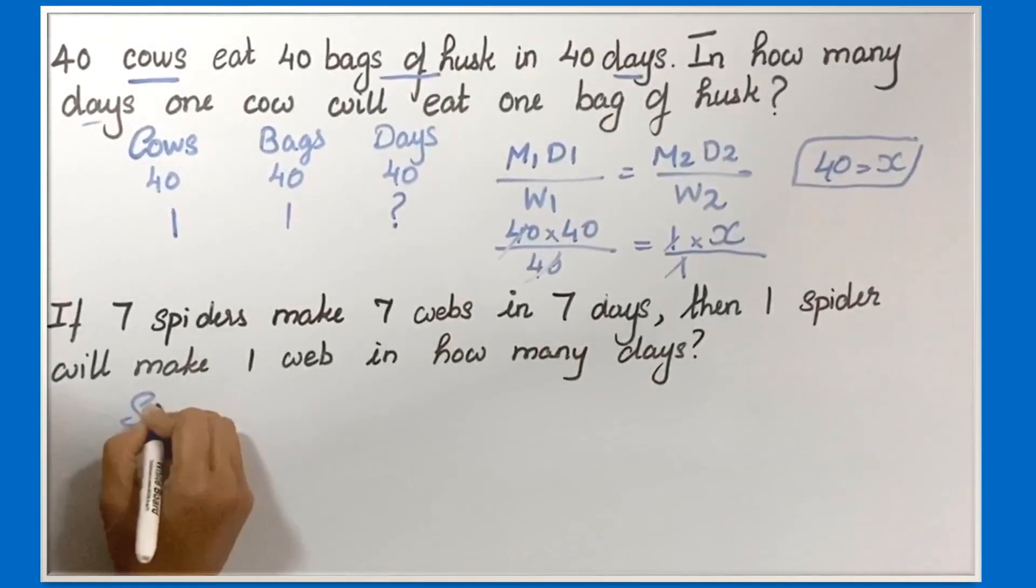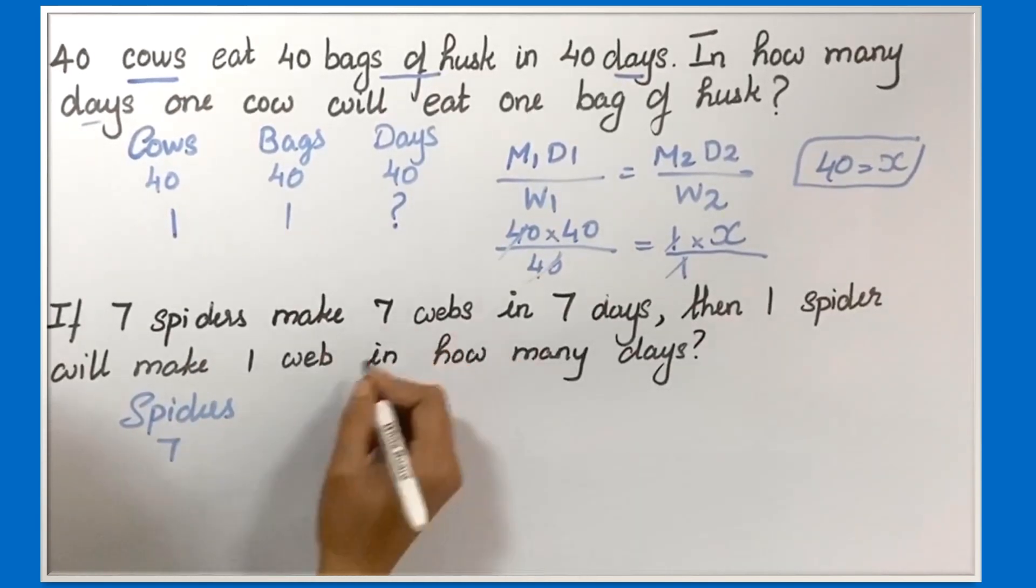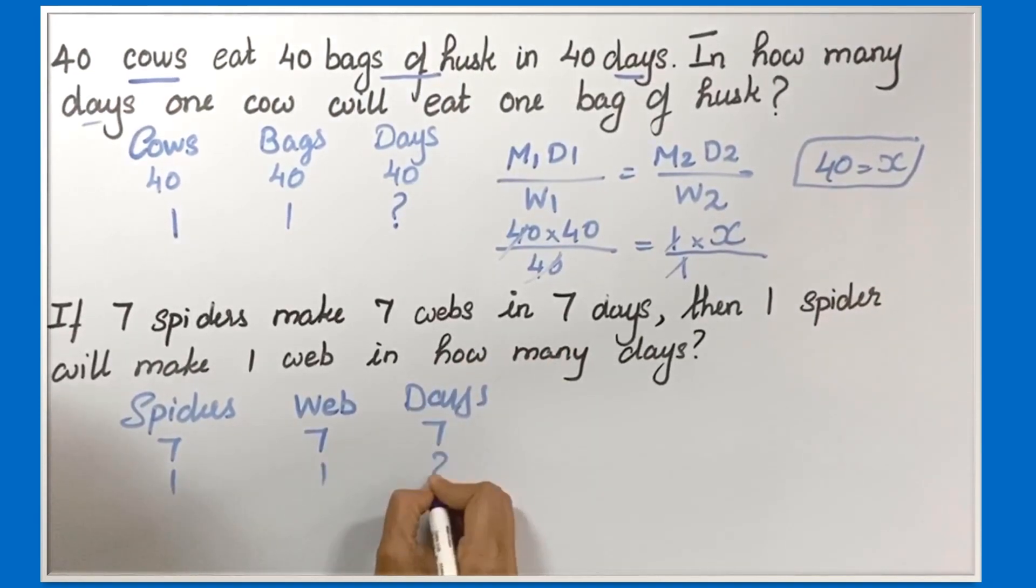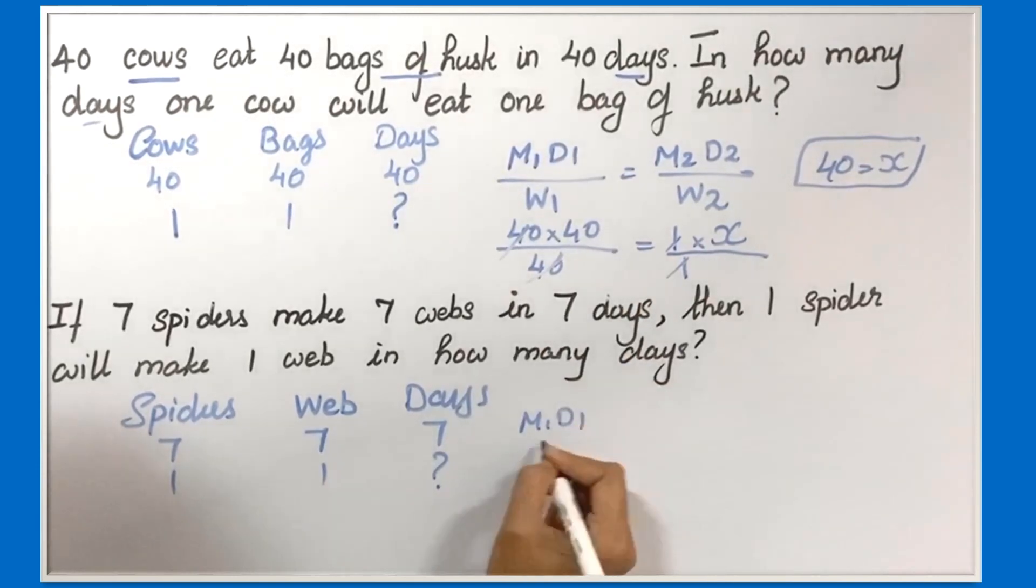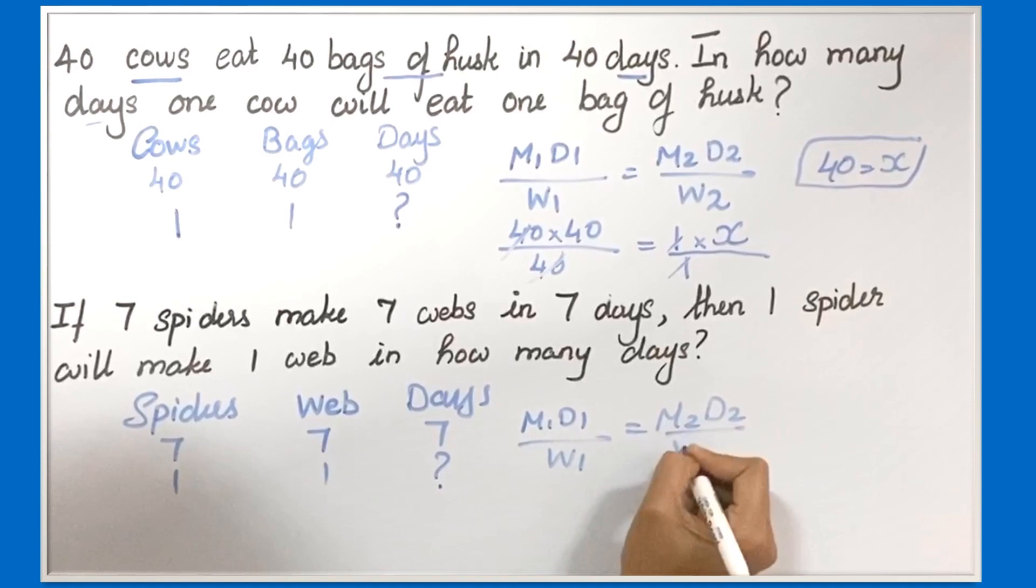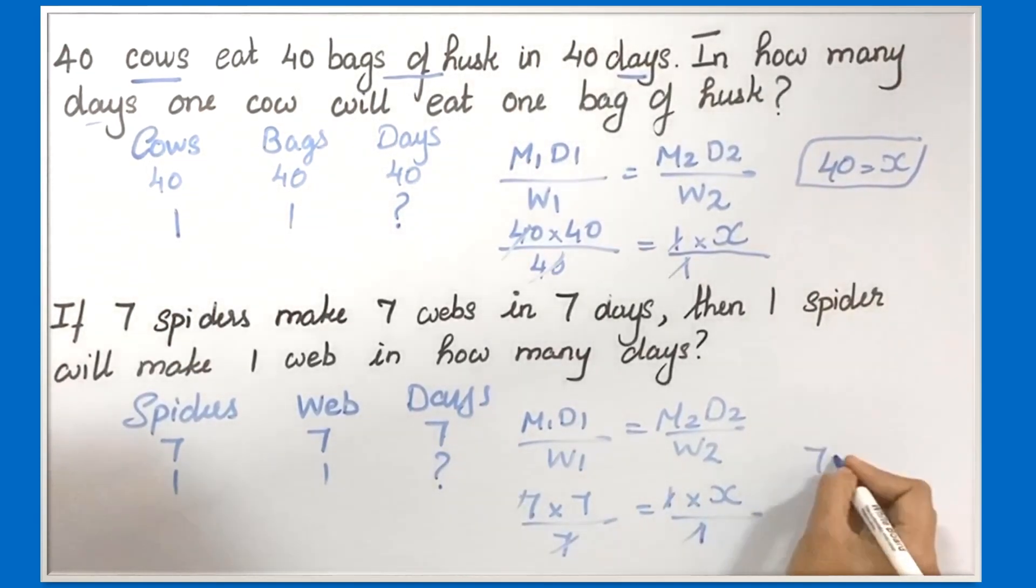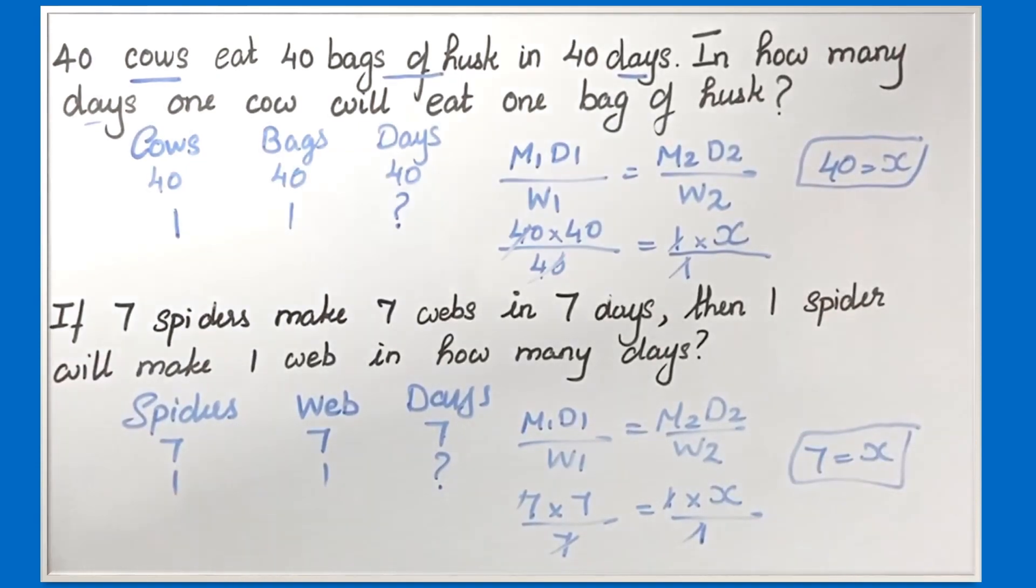7 spiders. The number of spiders here is 7. It's making webs, so the work done is making webs - 7 webs. The number of days is 7. 1 spider will make 1 web in how many days? Use the same formula: M1*D1/W1 = M2*D2/W2. M1 is number of spiders 7, D1 is days 7, W1 is work done 7 webs. M2 is 1, D2 is unknown X, W2 is 1. Cancel, so X is 7. It takes 7 days to make 1 web.